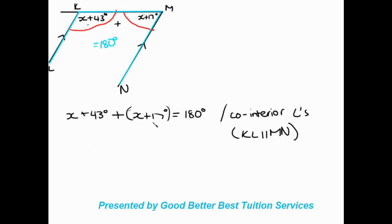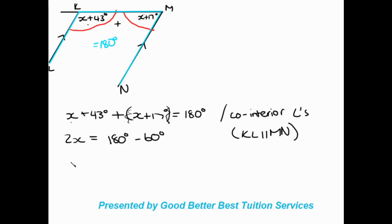The brackets fall away since there's no negative in front of them. Collecting like terms: 2x plus 60 degrees equals 180 degrees. Taking 60 to the other side: 2x equals 120 degrees. Dividing both sides by 2, therefore x equals 60 degrees.